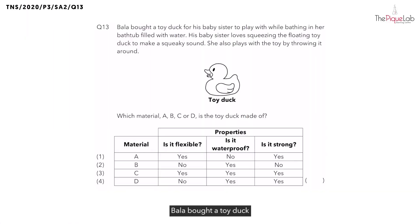Question 13. Bala bought a toy duck for his baby sister to play with while bathing in her bathtub filled with water. His baby sister loves squeezing this floating toy duck to make a squeaky sound and she also plays with the toy by throwing it around.